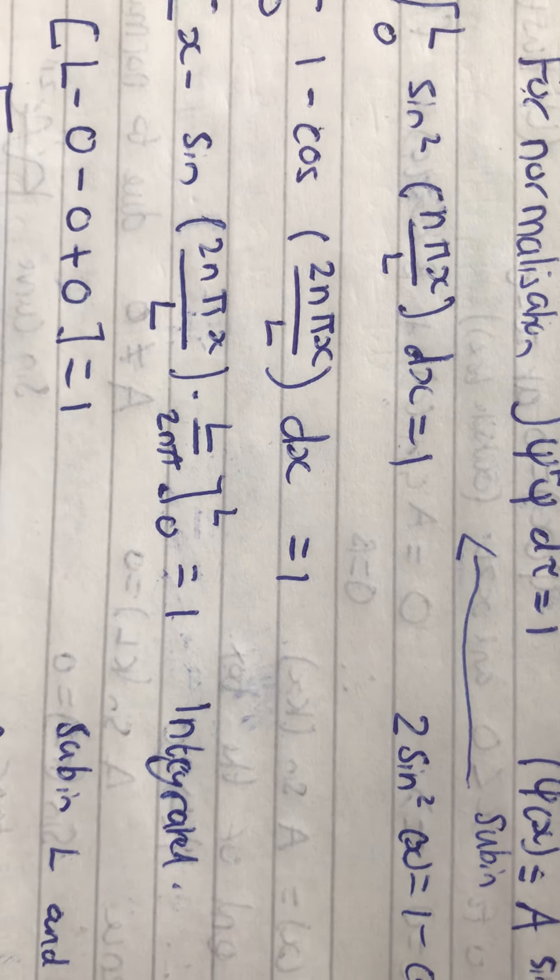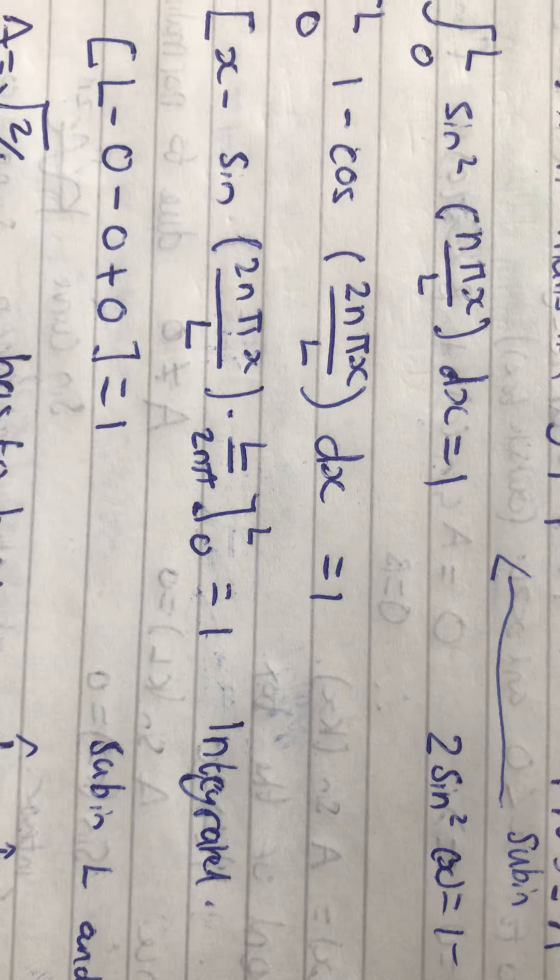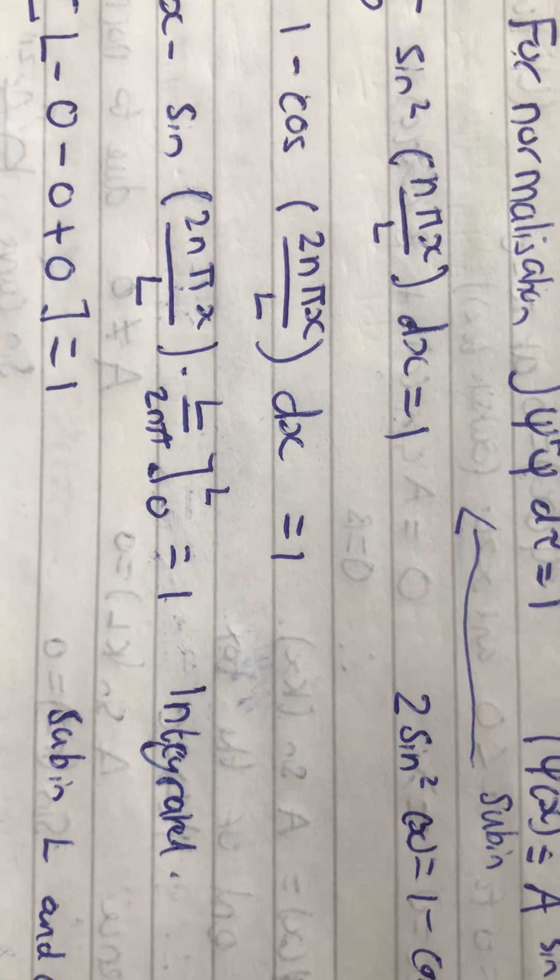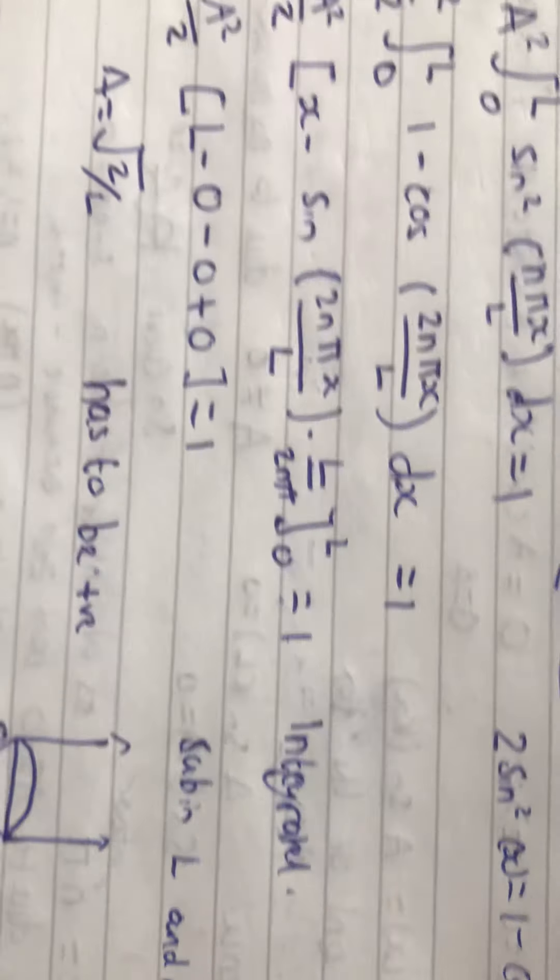So, yeah, if you divide 2nπ over L by 1, you'll get L over 2nπ. And, that's equal to 1.